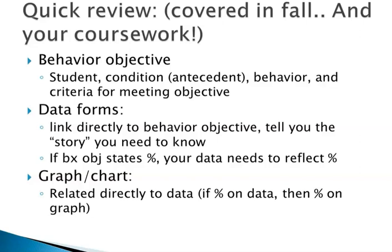And then finally, we have a graph — or if you're using a standard acceleration chart, you'll have a chart. This also needs to be directly related to the data form. If your objective is measuring percentages, your data is measuring percentages, your graph has to measure percentages — you should have 0 to 100 percent, the full range. If your behavior objective is measuring a specific number, say increase to 10 occurrences, your data form and graph will also reflect that.